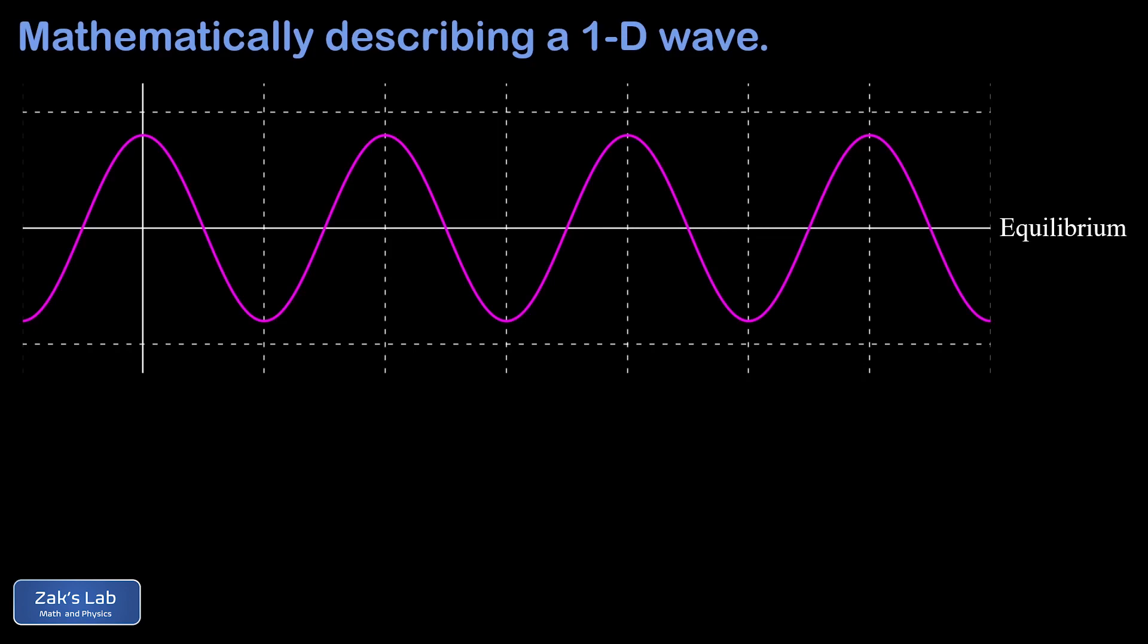The maximum displacement from that line is called the amplitude. Note that the amplitude is the distance from equilibrium to the highest point, or from equilibrium to the lowest point, not the distance from the highest to lowest point, which would be twice the amplitude. The distance from crest to crest, or trough to trough, is called the wavelength of the wave, usually given by the Greek letter lambda. And that's the distance before the wave starts to repeat itself.